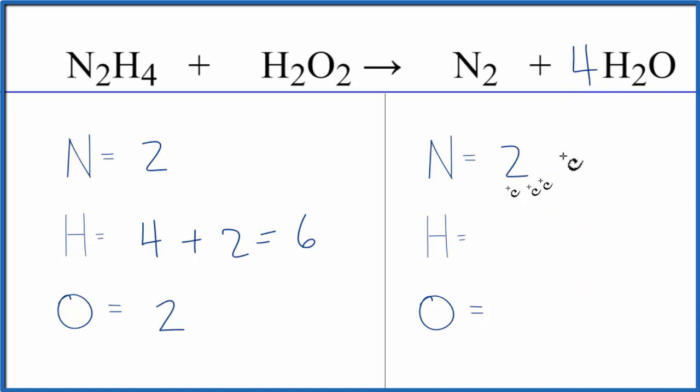So I have nitrogen's the same. Two times four, that gives me eight hydrogens. One times four, that'll give me four oxygens. I can work with that because I could put two in front of the hydrogen peroxide, the H2O2.